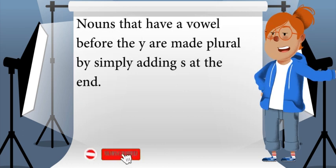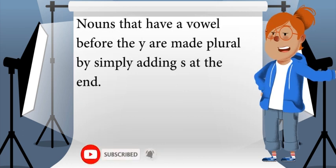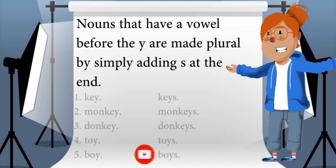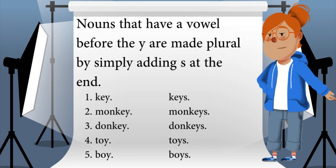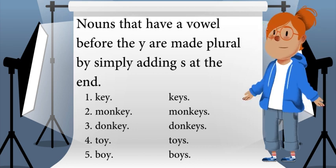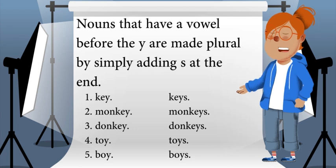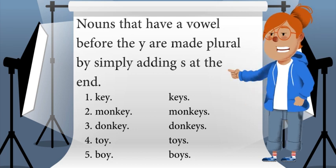Nouns that have a vowel before the y are made plural by simply adding s at the end. Key becomes keys, monkey becomes monkeys, donkey becomes donkeys, toy becomes toys, boy becomes boys.